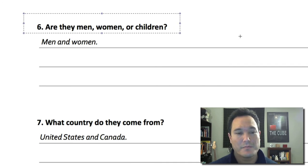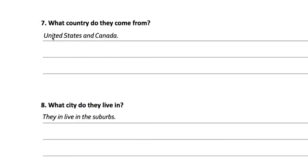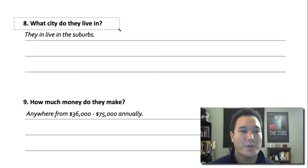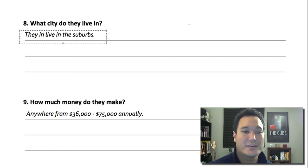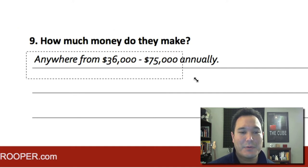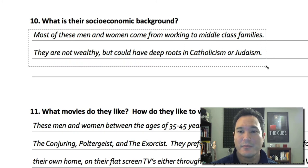Number six: are they men, women, or children? I wrote that they're men and women — I'm not targeting children. Number seven: what country do they come from? I wrote the United States and Canada, because the majority of people using hashtag paranormal or hashtag scary movies are English-speaking countries, so I'd start with North American countries. Number eight: where do they live? They live in the suburbs where some funny, funky, ghostly things could happen. Number nine: how much money do they make? Anywhere between $36,000 to $75,000 annually. Number ten: what is their socioeconomic background? Most of these men and women come from working middle-class families — not wealthy, but could have deep roots in Catholicism or Judaism.